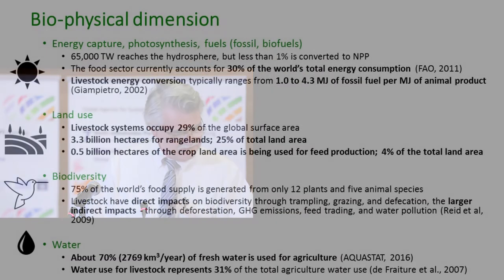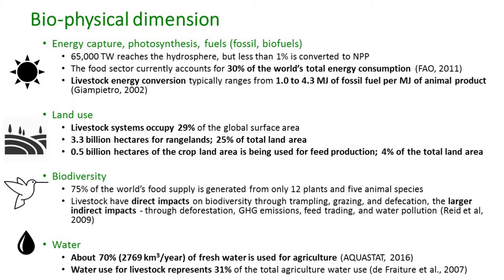On the biophysical dimension: out of the 60,000 terawatt total energy reaching the planet, plants convert only about 1% into net primary production. The food sector uses about 30% of the world's total energy, and livestock energy conversion typically ranges from 1 to 4.3 megajoules of fossil fuel per 1 megajoule in animal product. In terms of land use, about 29–30% of global surface serves the livestock sector — approximately 3.3 billion hectares of rangelands and half a billion hectares of arable land for feed production.